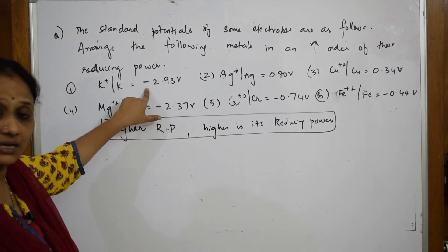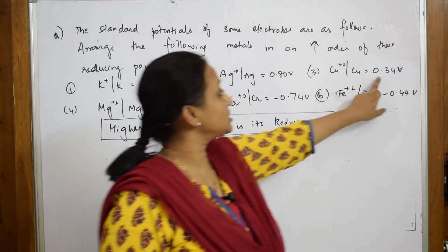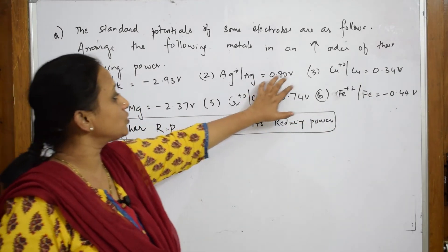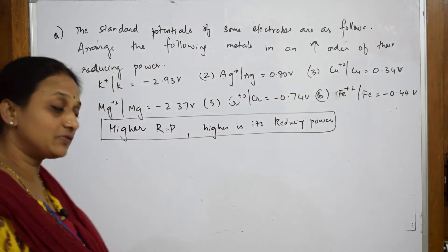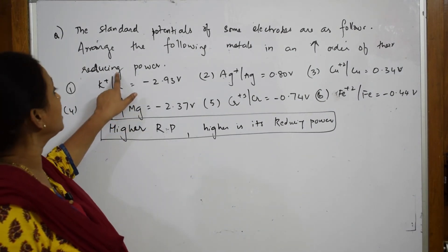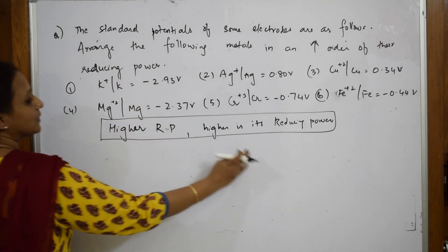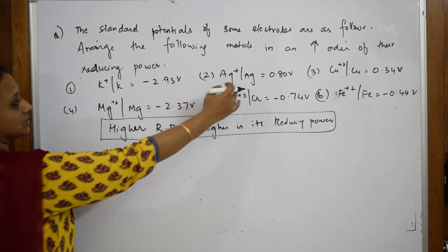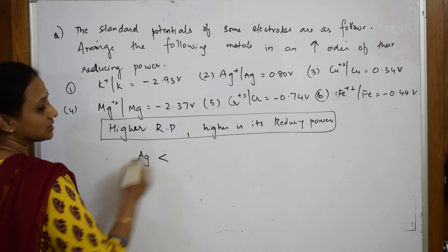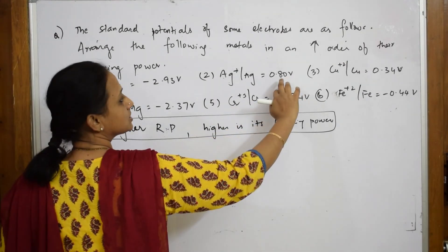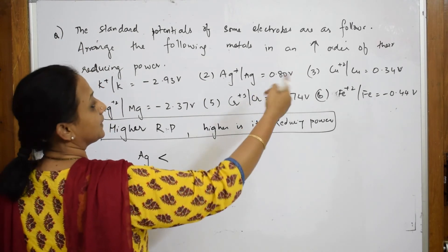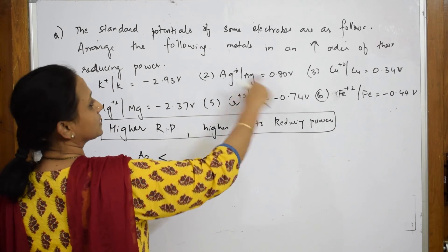Now looking at the given values: some are reduction potentials and some are oxidation potentials. They've asked us to arrange in increasing order of reducing power, so whichever has the maximum reducing power should come at the end. Let us start — silver has the highest reduction potential, so it comes first in increasing order.